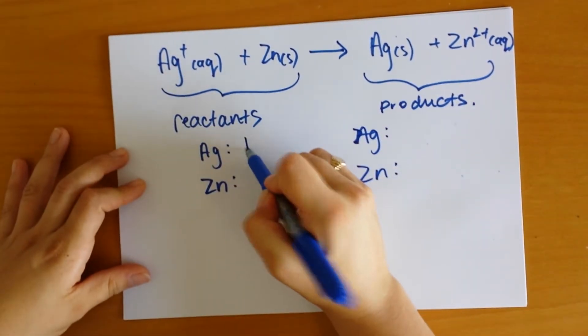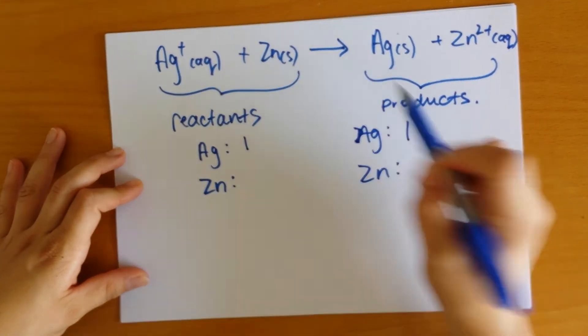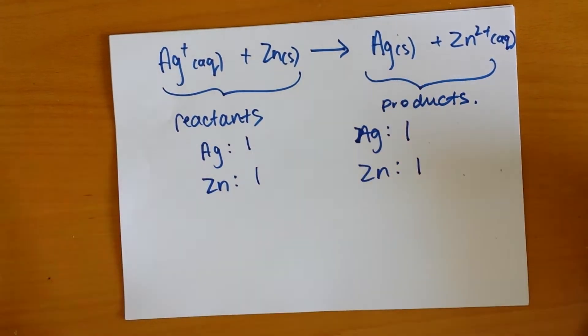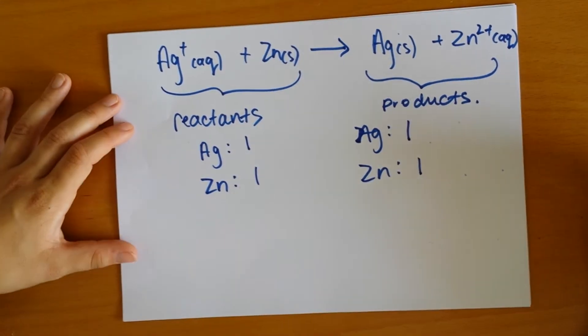We've got one silver here, one silver here, and zinc - we've got one of each atom. So it looks like we've already got a balanced equation.